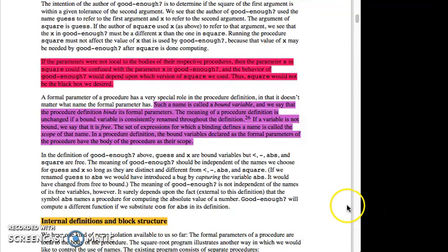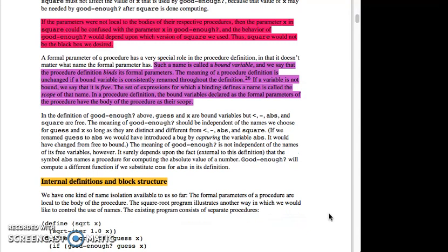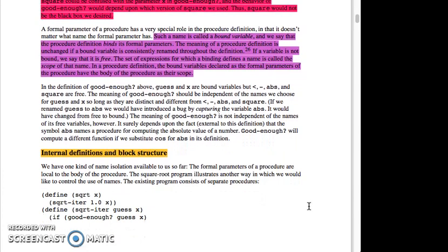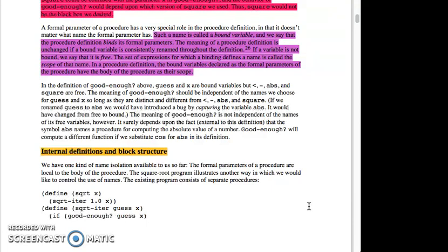In the definition of good enough above, guess and x are bound variables, but less than, minus, abs, and square are free. The meaning of good enough should be independent of the names we choose for guess and x as long as they are distinct from less than, minus, abs, and square. If we renamed guess to abs, we would have introduced a bug by capturing the variable abs. It would have changed from free to bound. The meaning of good enough is not independent of the names of its free variables, however. It surely depends on the fact, external to this definition, that the symbol abs names a procedure for computing the absolute value of a number. Good enough will compute a different function if we substitute cosine for abs in its definition.